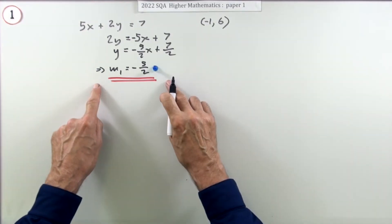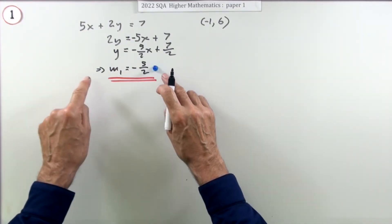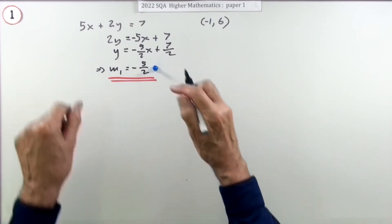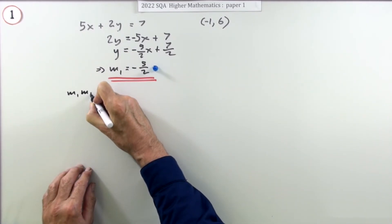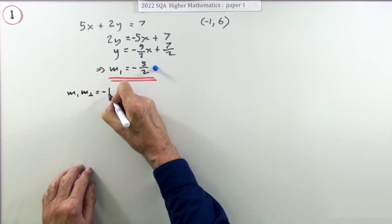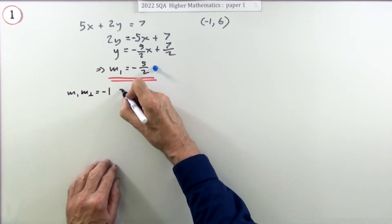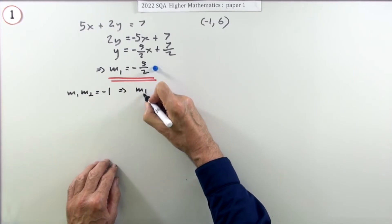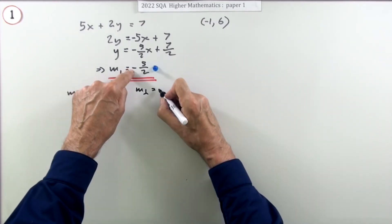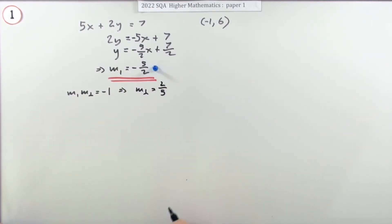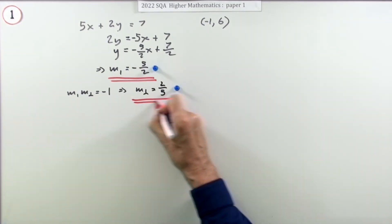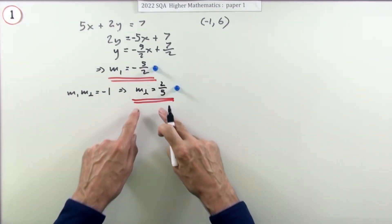Now if the line's meant to be parallel it'll have the same gradient. If it's meant to be perpendicular it'll have the negative of the reciprocal. You could put that down as a statement if you like: m1 times the perpendicular gradient must multiply to give negative 1. So that means that the perpendicular gradient will be the negative, which is positive, of the reciprocal, which is two fifths. Doing that gets a mark.